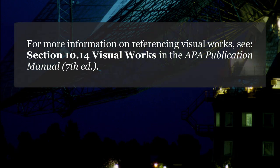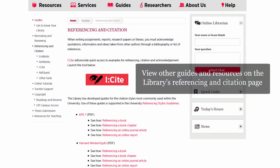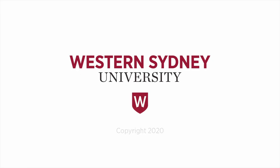For more information on referencing visual works, see section 10.14 Visual Works in the APA Publication Manual, 7th edition. For artworks in a museum or on a museum website, have a look at our video on referencing artworks. Also see the guides and resources on the library's referencing and citation page. For more information, please contact the library.